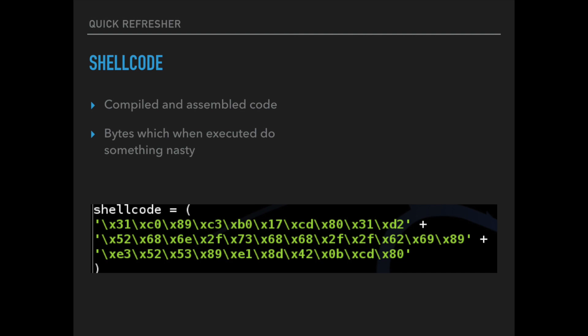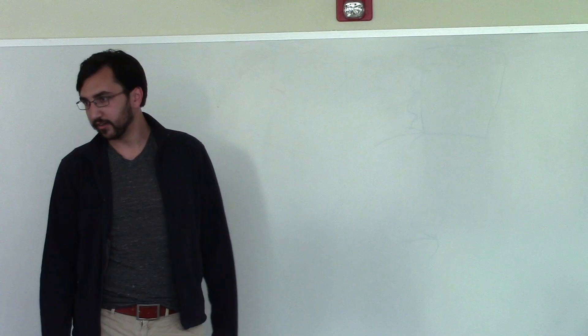A quick overview of what shellcode actually looks like: it's literally compiled code — hexadecimal bytes that are the translation of assembly we want to execute. This is the type of data we're going to write to the read-write-execute page in order to take control of the browser.